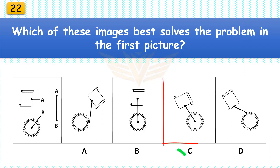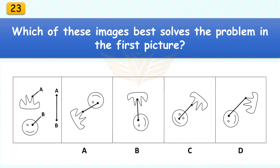Which of these images best solves the problem in the first picture? The correct answer is C. Rotate the scroll 45 degrees.